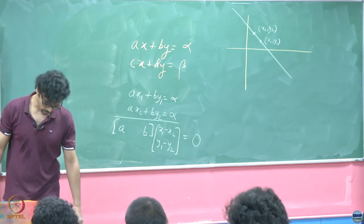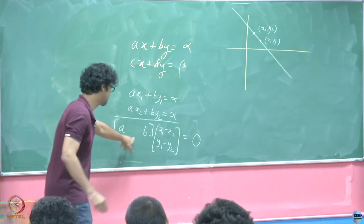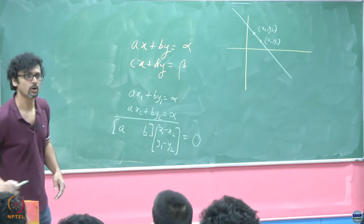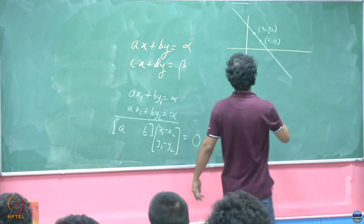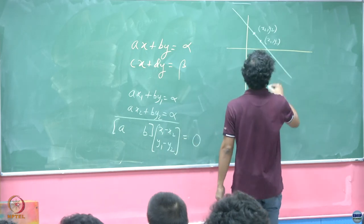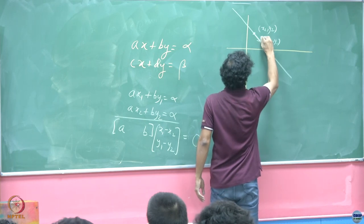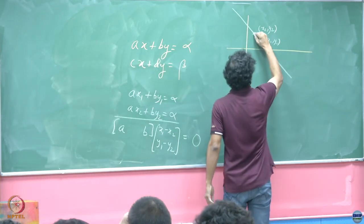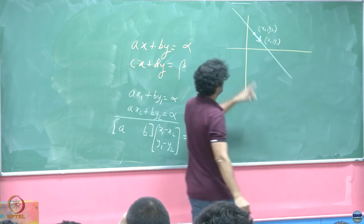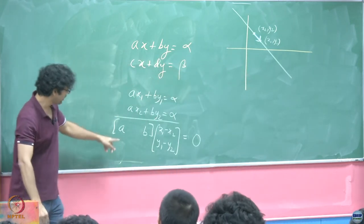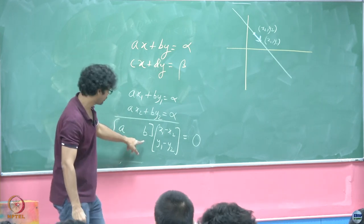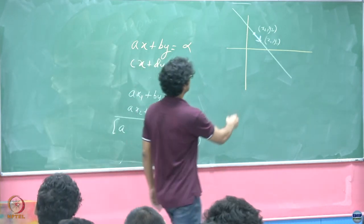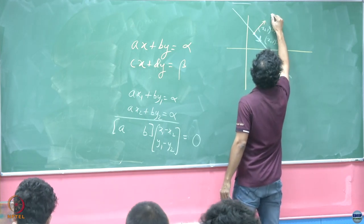So you have Ax1 plus By1 equals alpha, Ax2 plus By2 equals alpha and you subtract them. What you end up with is the vector AB times x1 minus x2, y1 minus y2 equals 0. Even without going into things like inner products, in two dimensions you understand what this is. It is a dot product, a dot product being 0 means they are orthogonal.